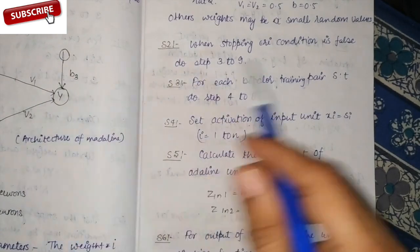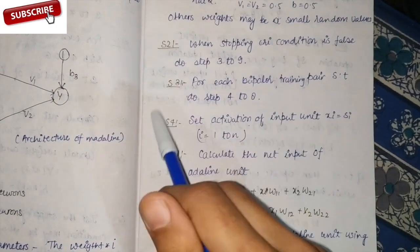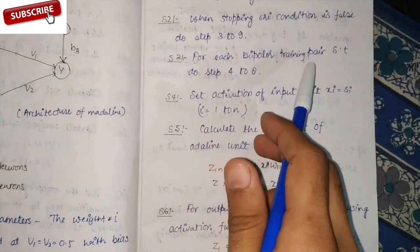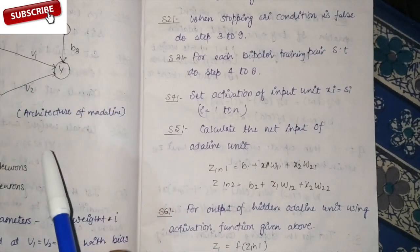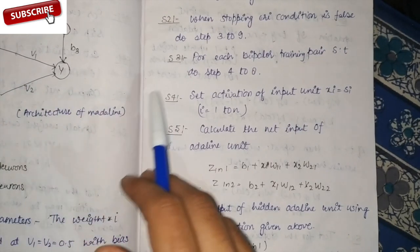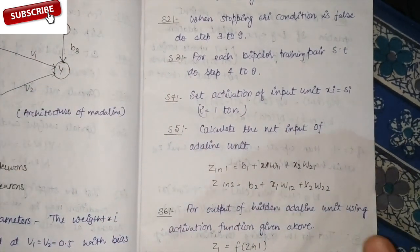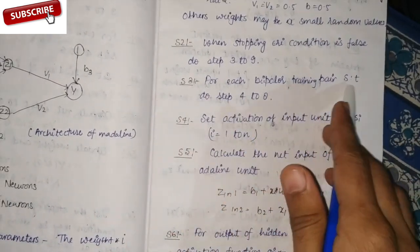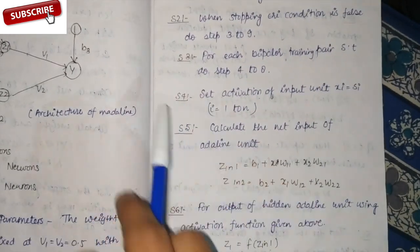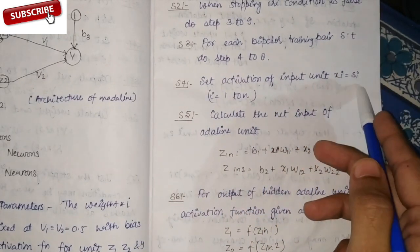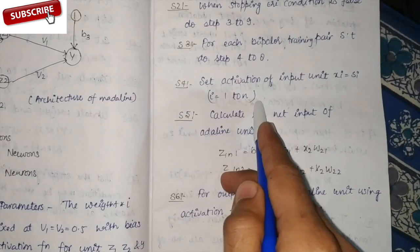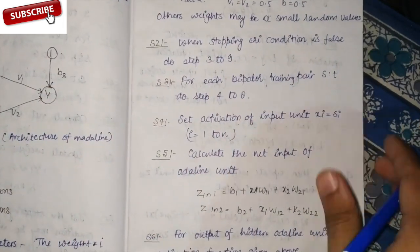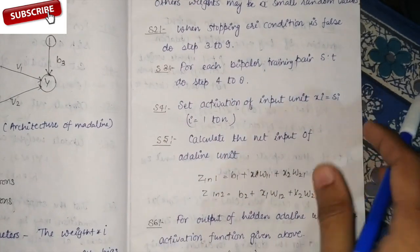Step two: set the stopping condition — when false, go to steps 3 to 9. Step three: for each bipolar training pair, do steps 4 to 8. Step four: set the activation for each input unit — Xi equal to Si, where i equals 1 to n. Initialize weights and biases, set learning rate alpha from small random values, then check stopping condition steps 3 to 9, and for each training pair steps 4 to 8.